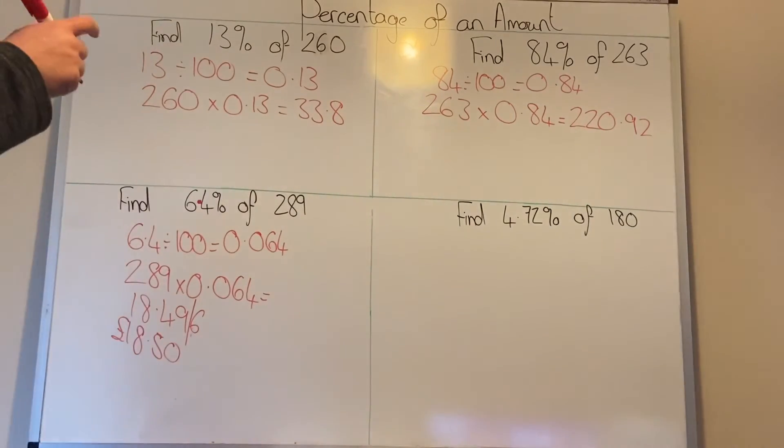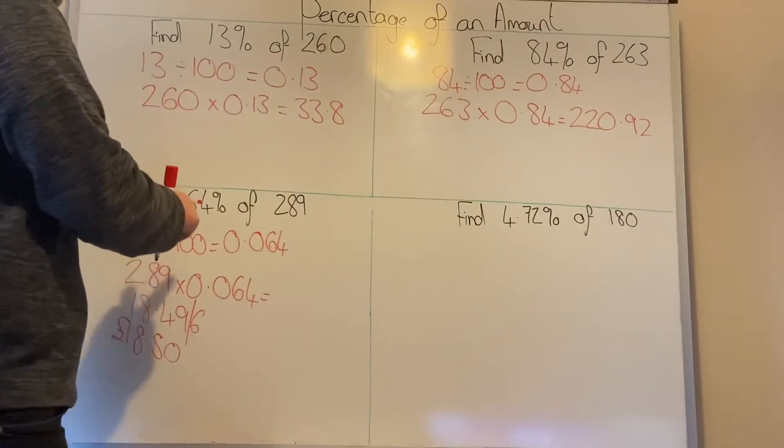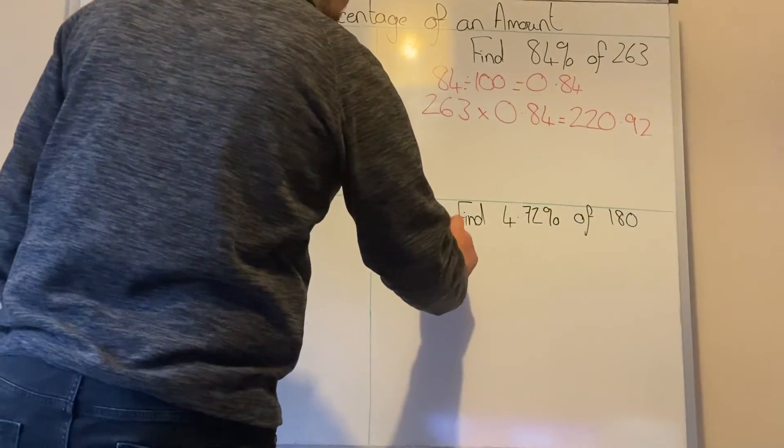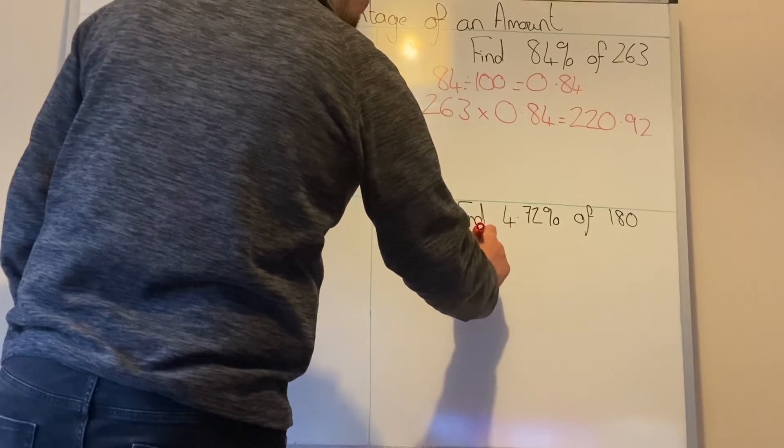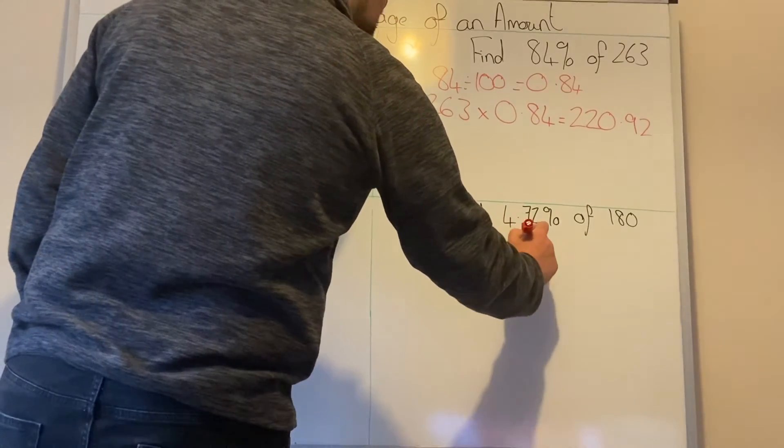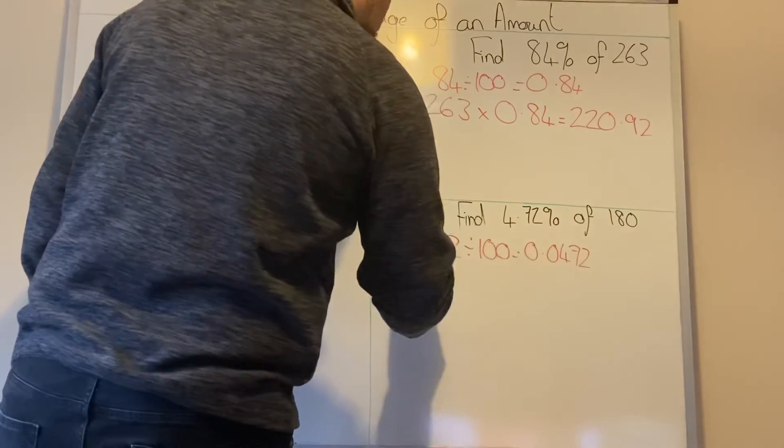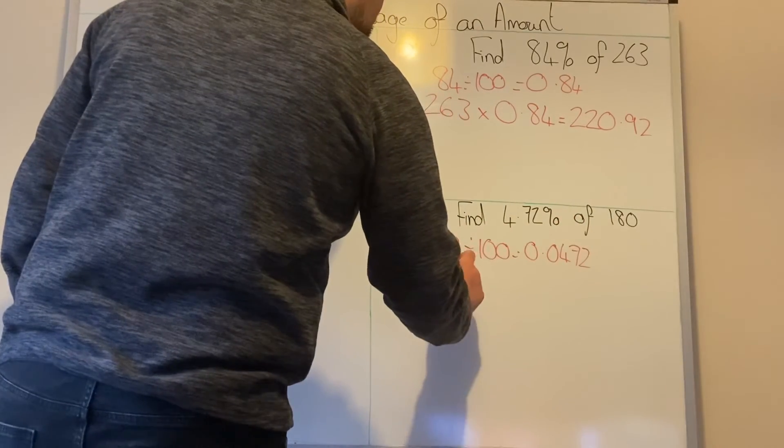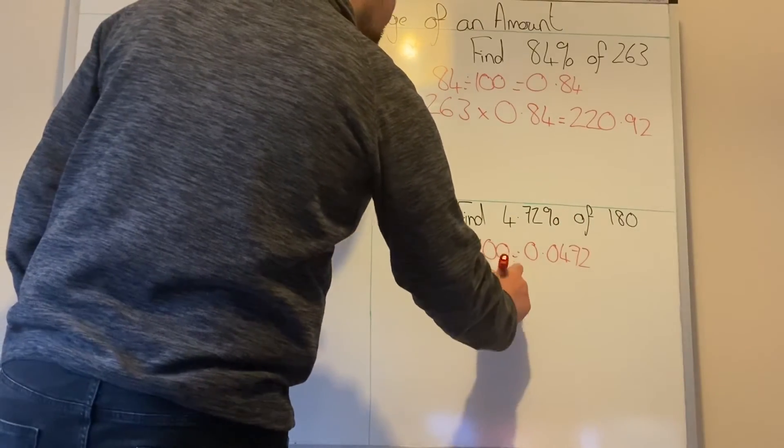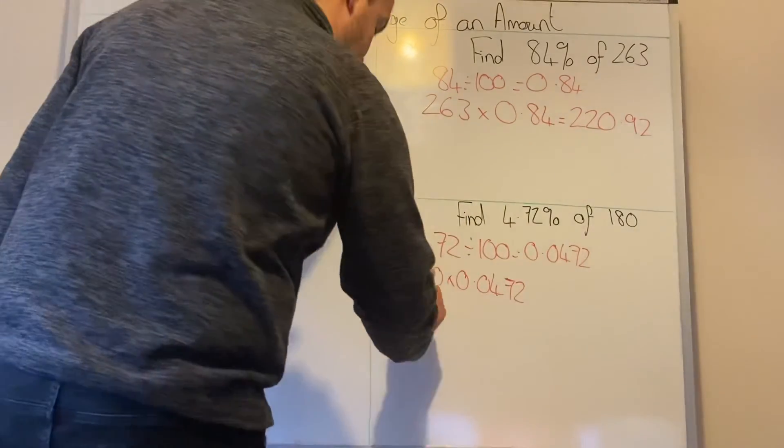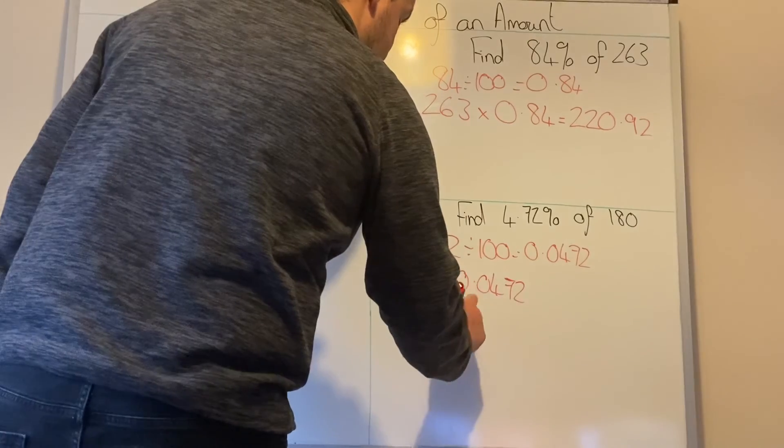Last one then. This one is very similar to the previous one, it's just different numbers. So we're going to do 4.72 divided by 100 which equals 0.0472. So 180 times by 0.0472 and you should get the answer of 8.496.